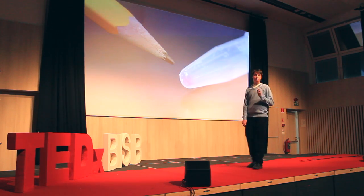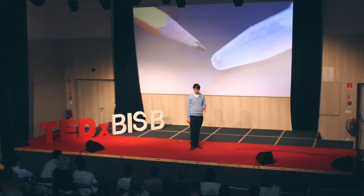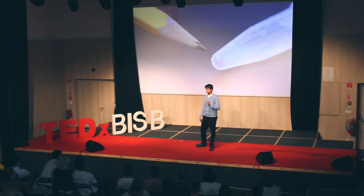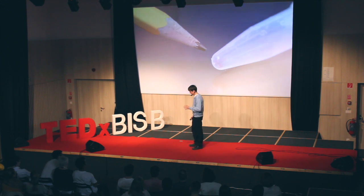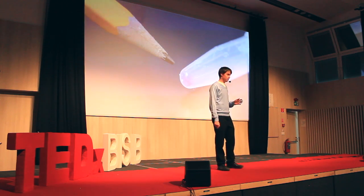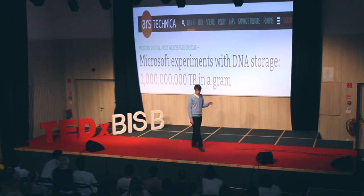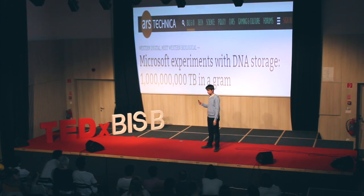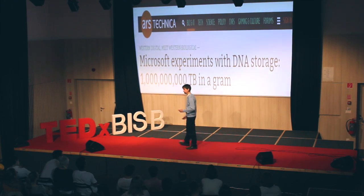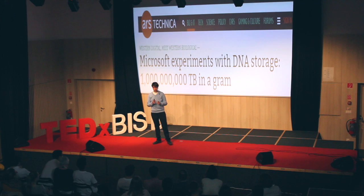Now, in 1988, when this first began, they were only able to store 35 bits, which is not great. Since then, Harvard says they can store 700 terabytes in one gram, and Microsoft did one better — they say they can store a billion terabytes in one gram. If they can actually store a billion terabytes in one gram, we would have the ability to store all of Facebook's data since it began — all the posts, comments, and likes — all of that on the tip of your finger.